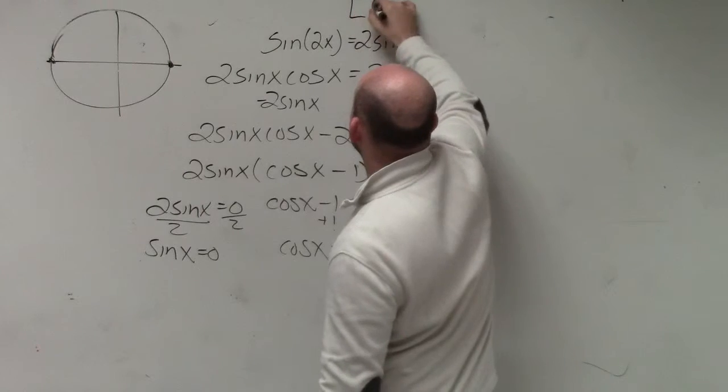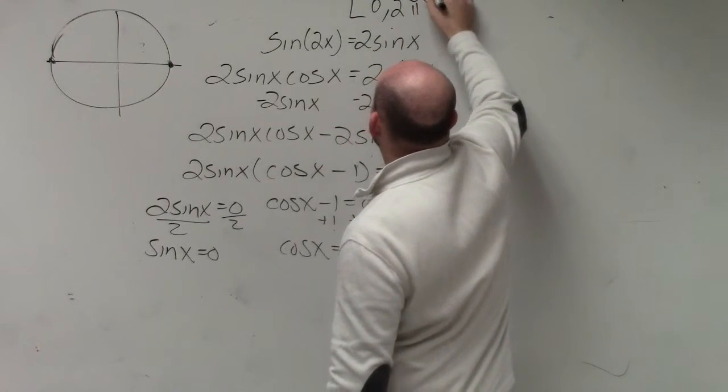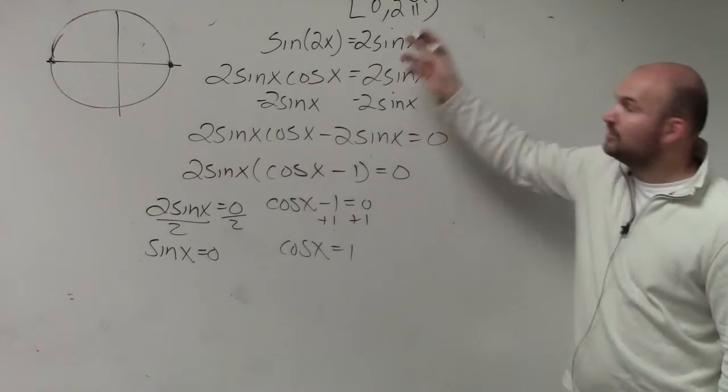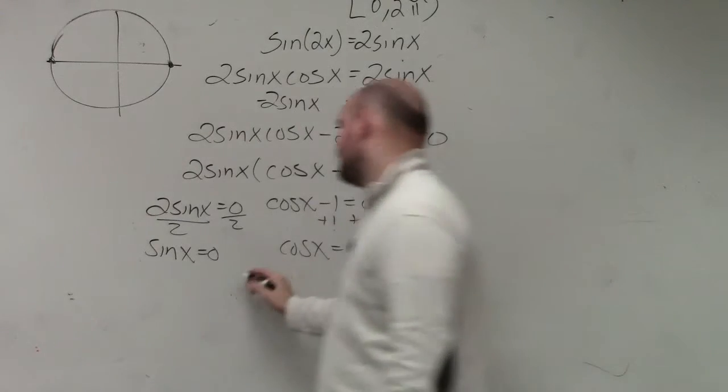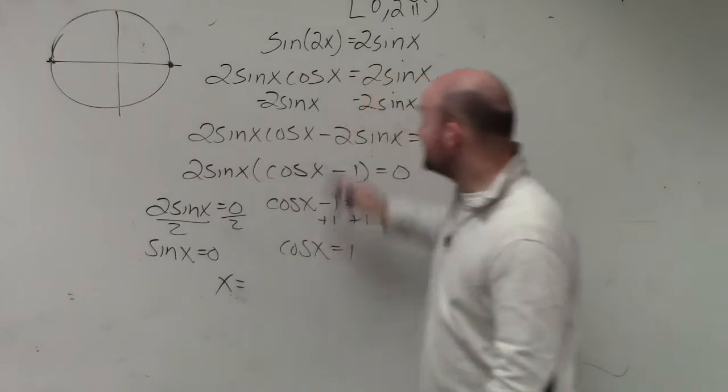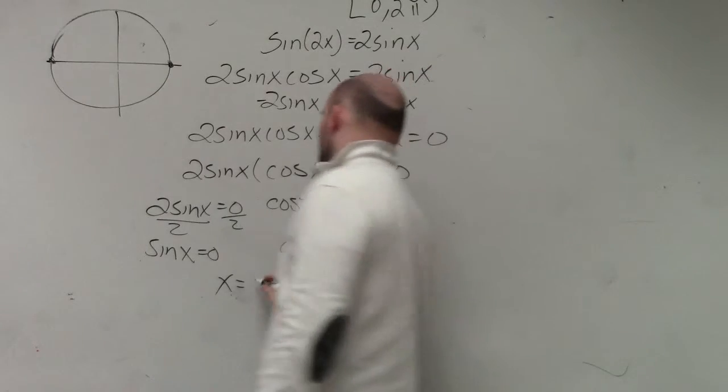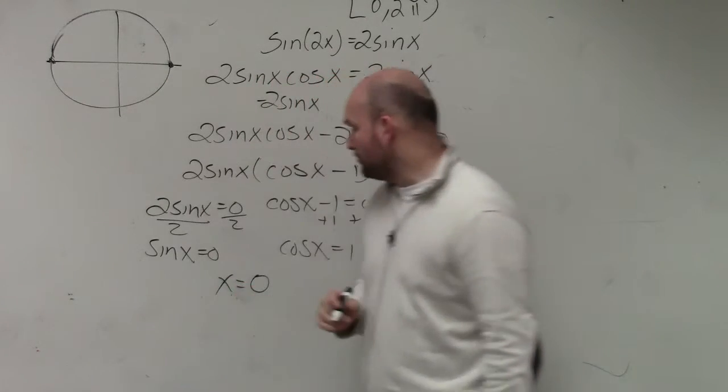So if your angles have to be between 0 and 2π, that means 0 is included but 2π is not. So therefore, my answer is cosine is equal to 1 at 0, or the angle 2π. So 0 is going to be the only one included.